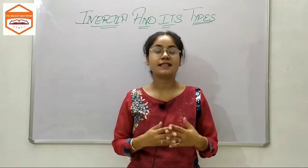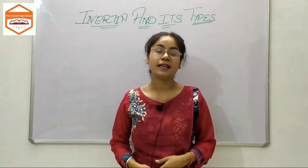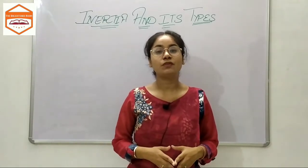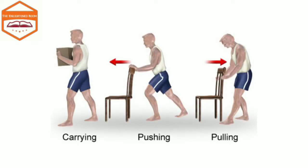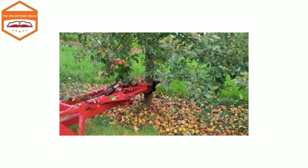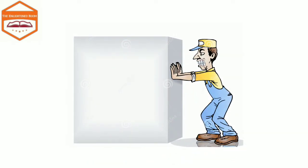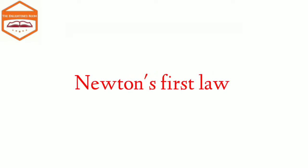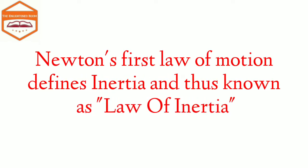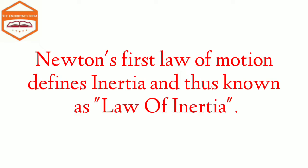Dear students, inertia is the tendency of an object or a body to remain at the position or state of rest or keep moving uniformly. In simple words, inertia of a body is measured by the magnitude of force required to change the state of the body. So larger the force required to change the state of the body, greater is its inertia. Newton's first law of motion defines inertia and is rightly called the law of inertia.